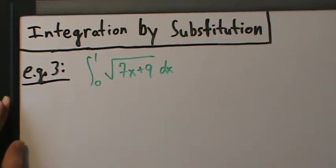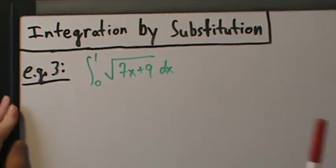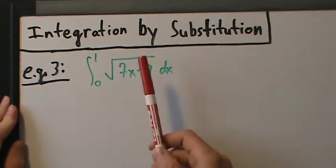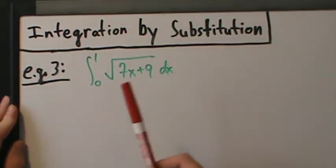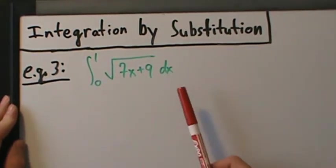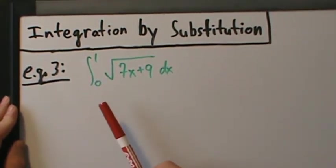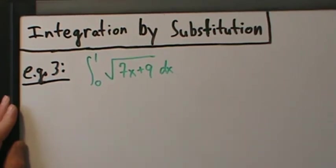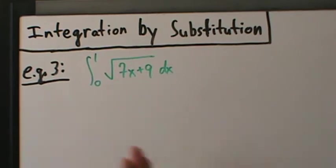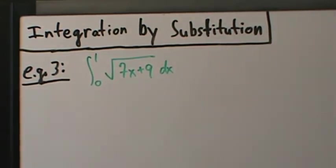Here's example three with integration by substitution — this is our first example of integration by substitution with a definite integral, so it's going to be a little bit different than indefinite. There are two different ways to approach it; they're kind of the same thing behind the scenes, but we'll do it both ways and compare them side by side.